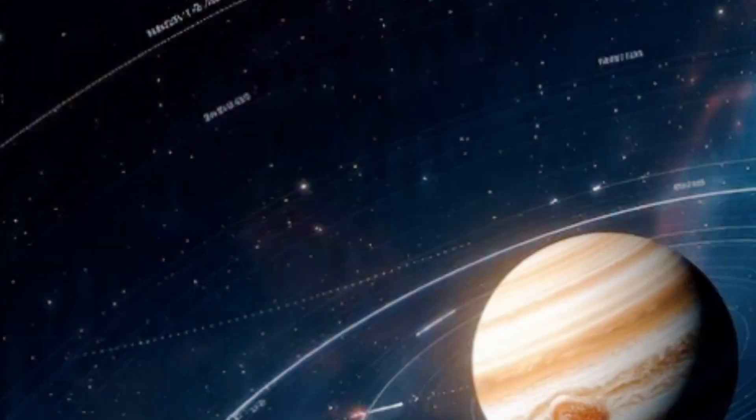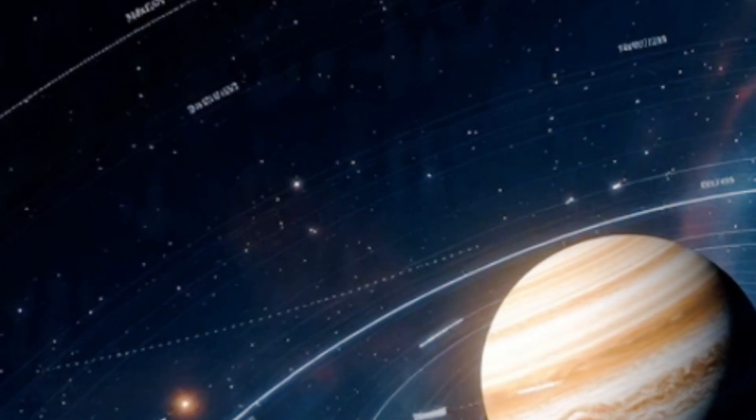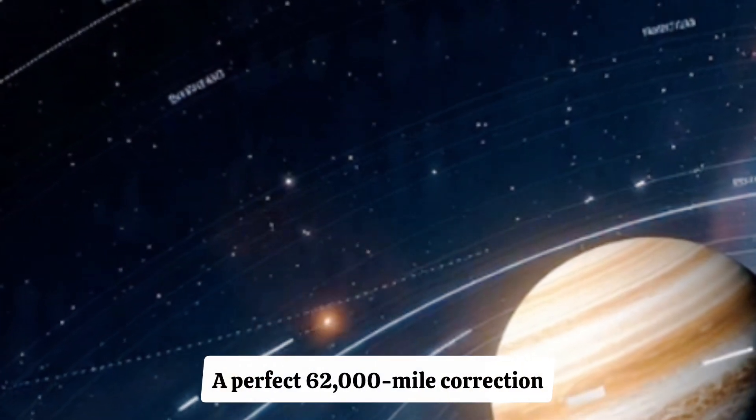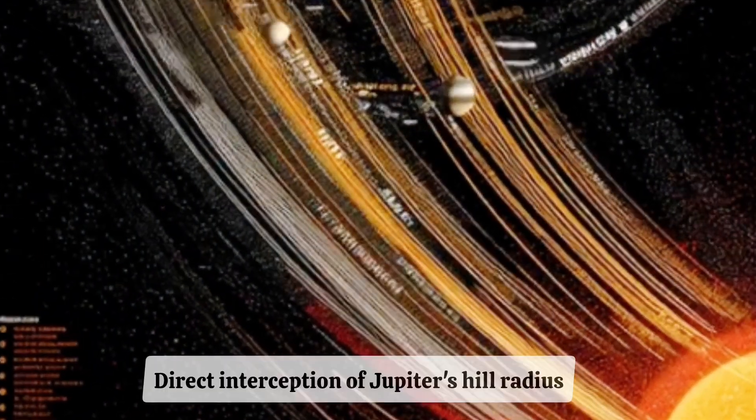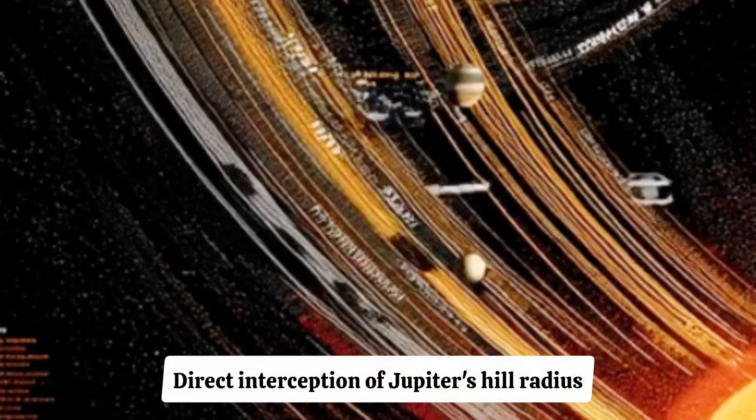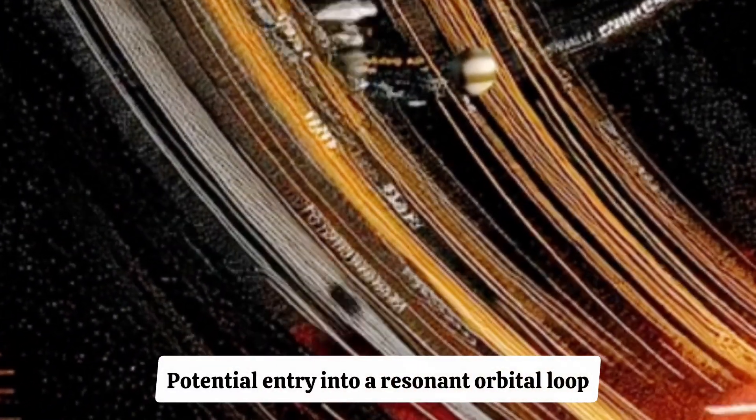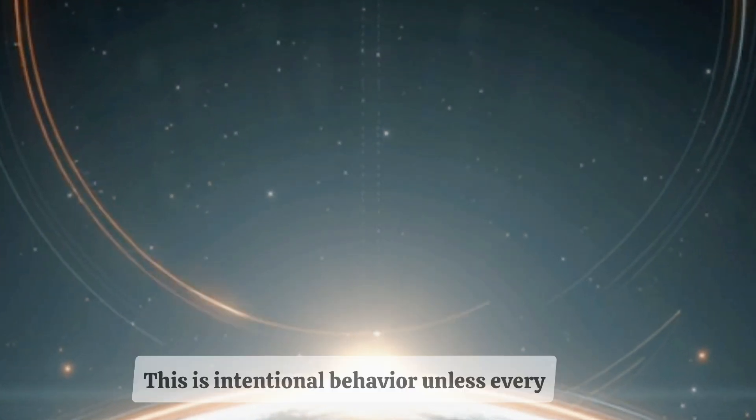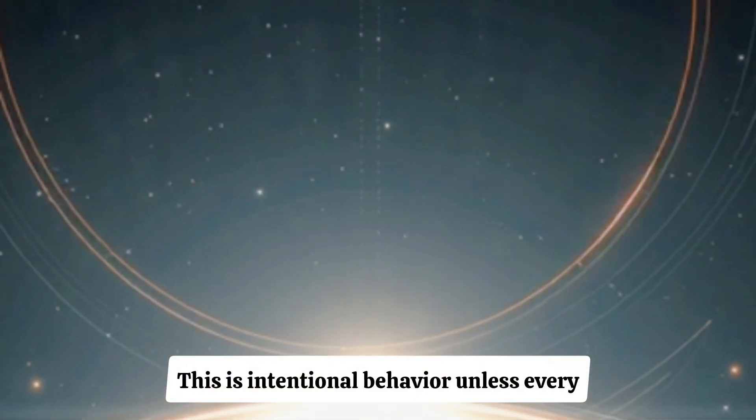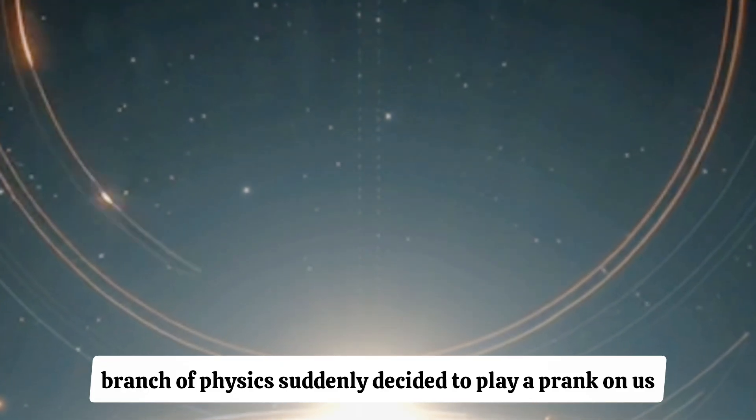Put all that together? A metallic object. Non-gravitational acceleration. A perfect 62,000 mile correction. Arrival during a low energy capture window. Direct interception of Jupiter's hill radius. Potential entry into a resonant orbital loop. This isn't normal. This isn't natural. This is intentional behavior unless every branch of physics suddenly decided to play a prank on us.